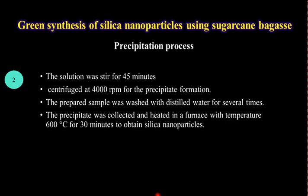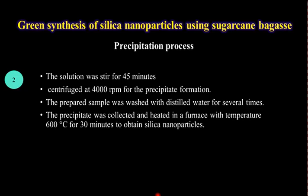The process was continued by washing the prepared sample with distilled water several times. The precipitate was collected and heated in a furnace at a temperature of 600 degrees centigrade for 30 minutes to obtain silica nanoparticles.